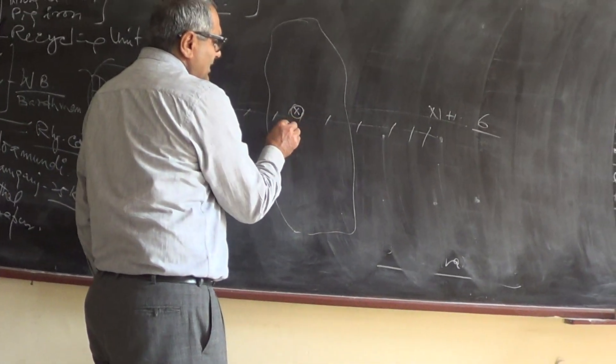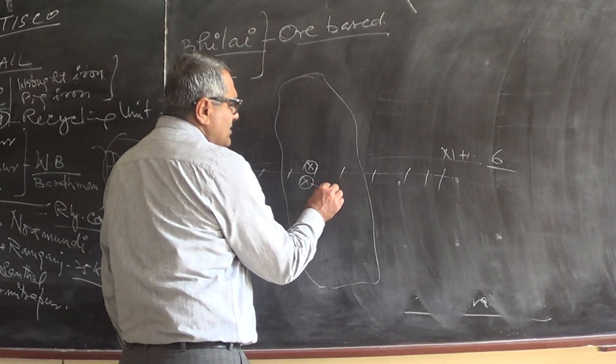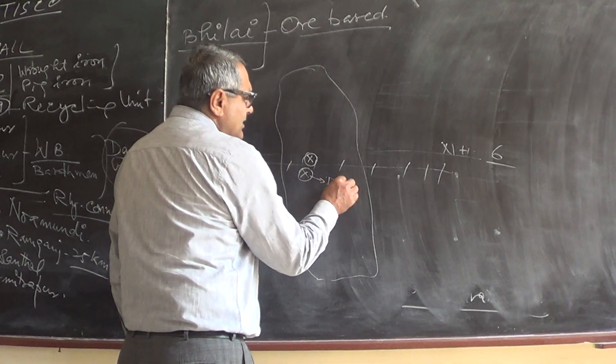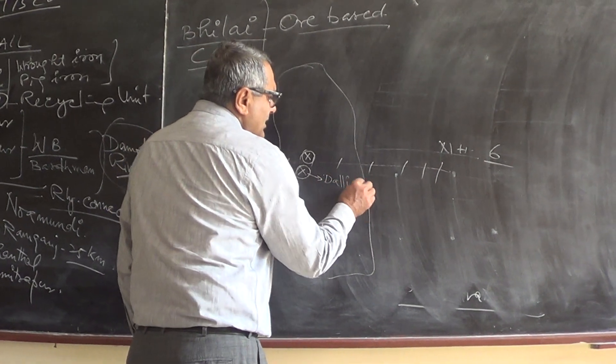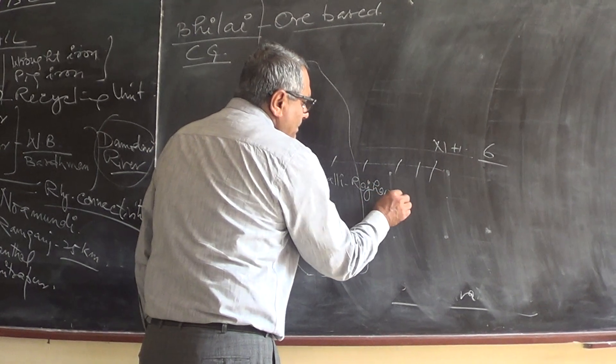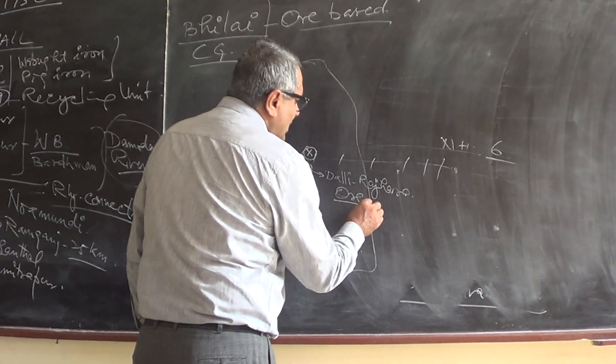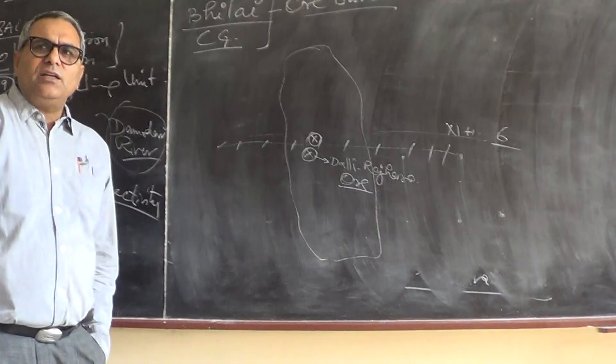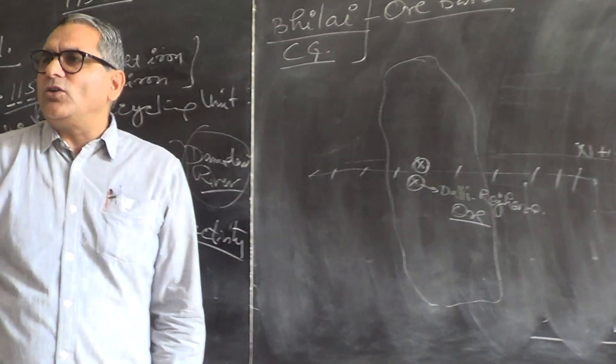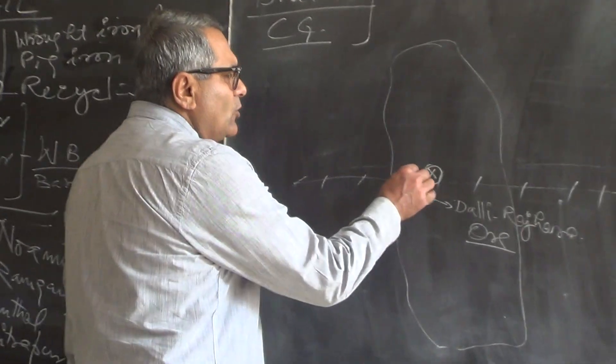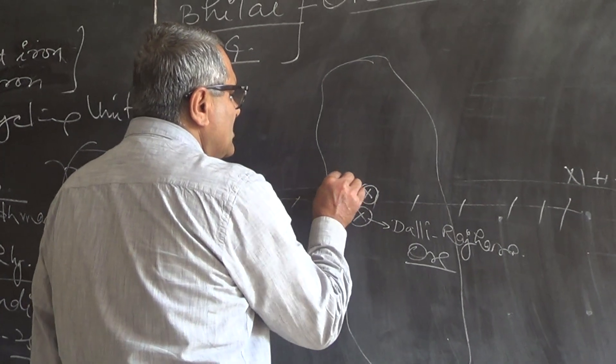So this area is the mixed ore mine that is called Dalli Rajhara. This is the iron ore and it is only 30 km from Bhilai. It is very close to Durg. This is Bhilai.